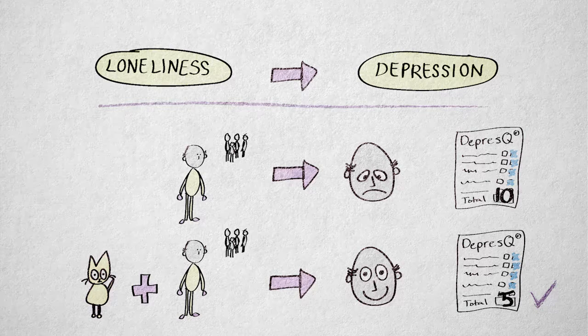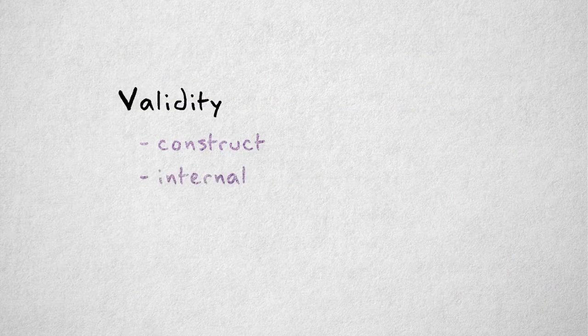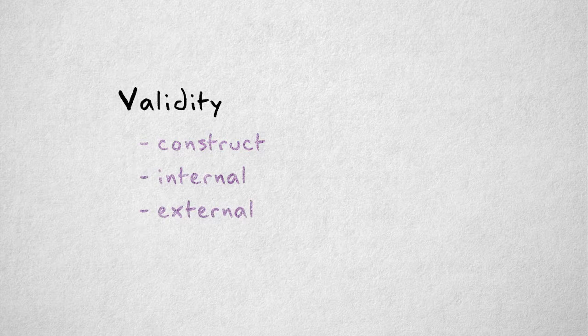Because this is still a pretty general question, we'll consider three more specific types of validity: construct, internal, and external validity.